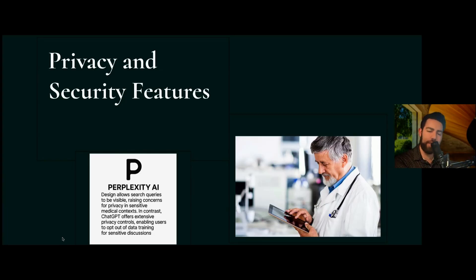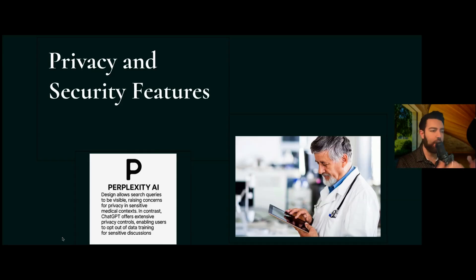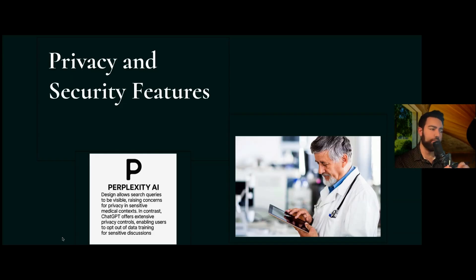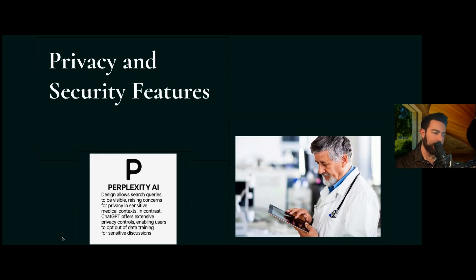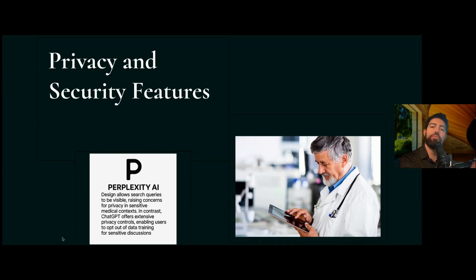Regarding privacy and security — we have another video on how to use ChatGPT in a HIPAA-compliant way in the physician efficiency series. Both Perplexity and ChatGPT are not HIPAA compliant, and you need to know how to de-identify your medical information before putting it in. Perplexity AI does not give you an option to turn off data training, which allows the company to train on the data you put into it.